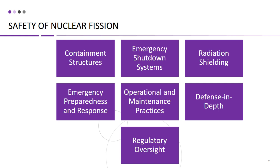While nuclear fission has many beneficial applications, it also comes with safety considerations. Safety measures are critical in nuclear power plants to ensure the safe and reliable operation of the reactors and to protect workers, the public, and the environment from potential hazards. Containment structures are large, robust structures designed to prevent the release of radioactive materials to the environment, even in the event of severe accidents. They are typically made of reinforced concrete and steel and are designed to withstand external forces such as earthquakes, floods, and impacts from external objects. Containment structures are equipped with multiple layers of barriers, including a primary containment vessel that surrounds the reactor, a secondary containment building, and sometimes a tertiary containment building for further safety.